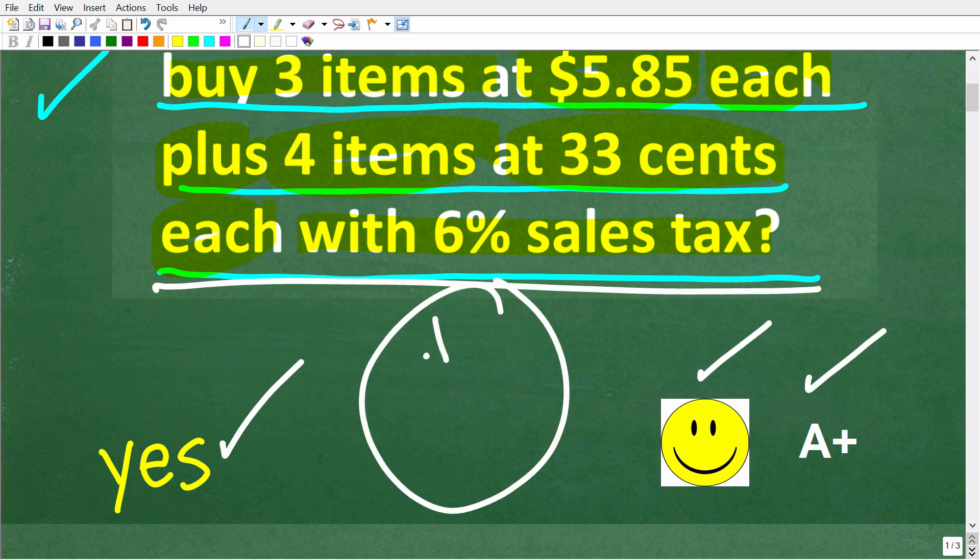You'd be like, Mr. YouTube math man, I got this right, but I just took a wild guess. You know, of course, the answer is either going to be yes or no, right? So either $20 is going to be enough money to buy all this stuff or it is not.